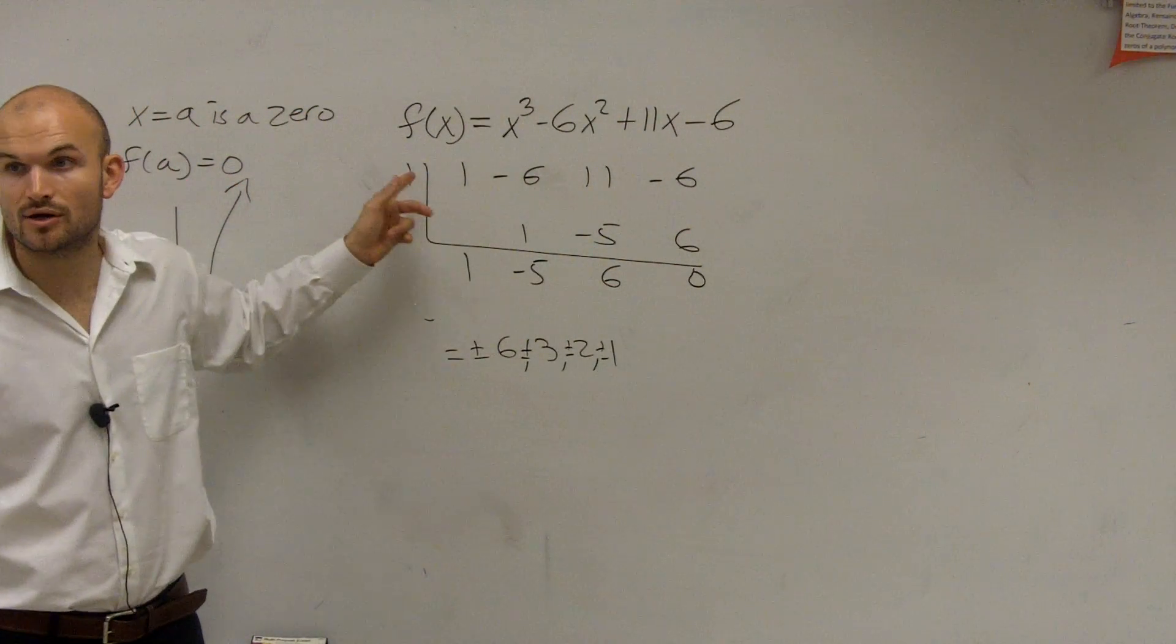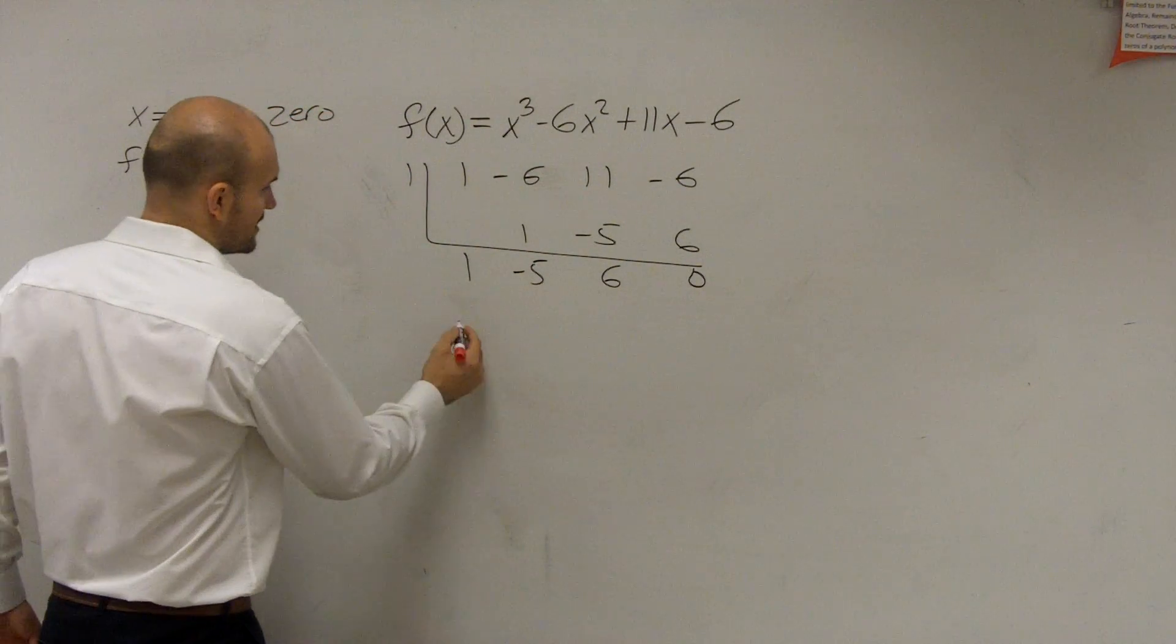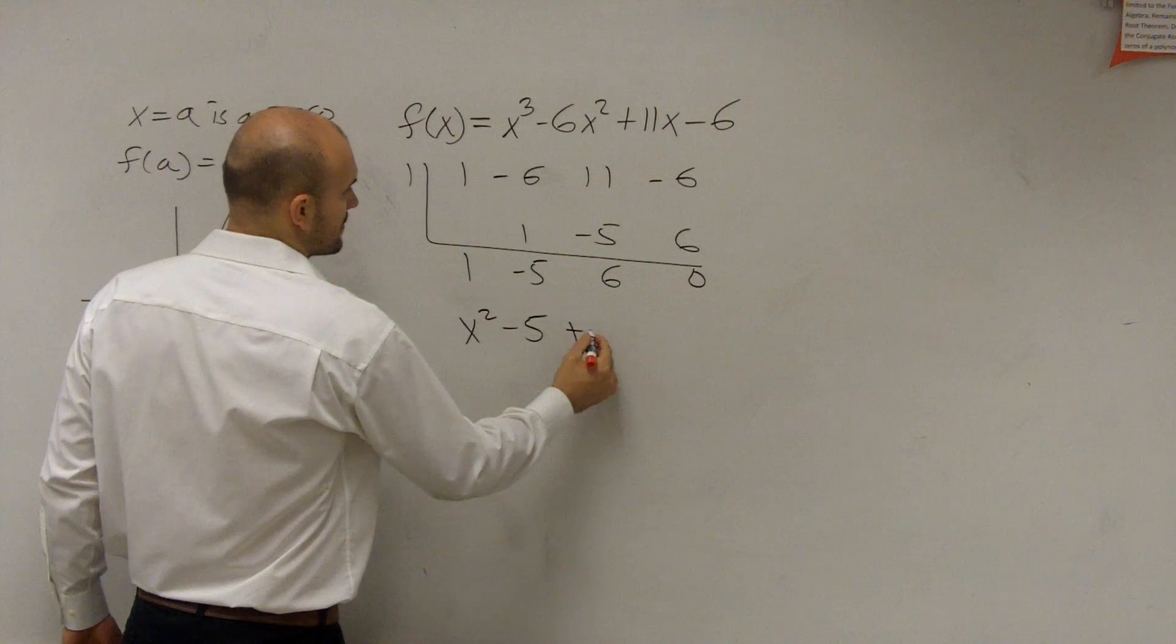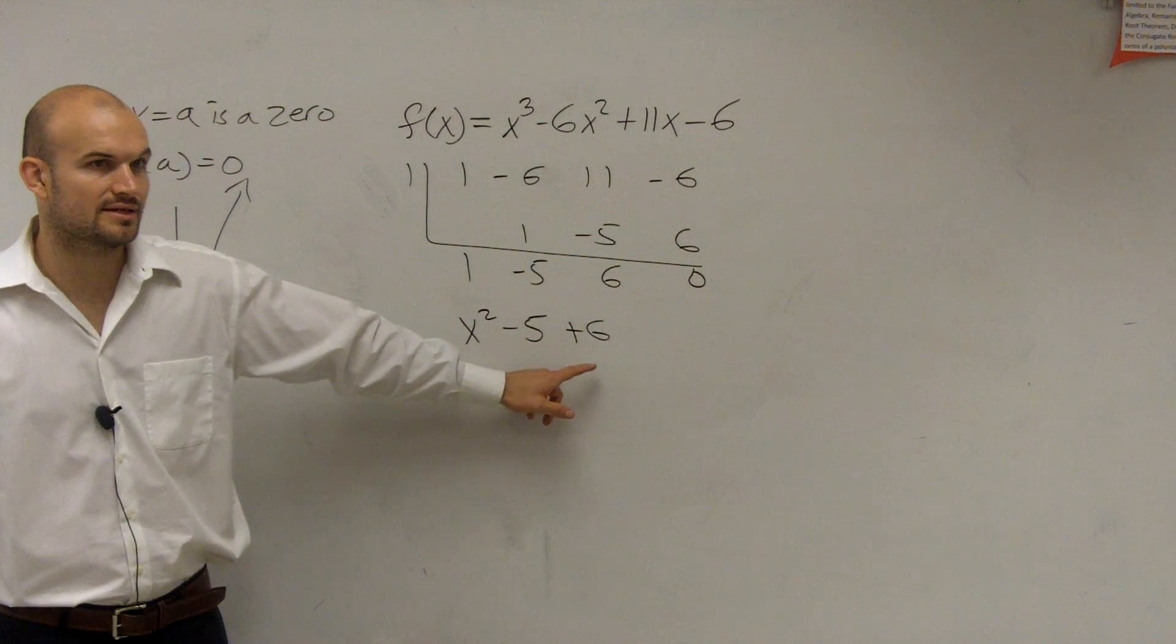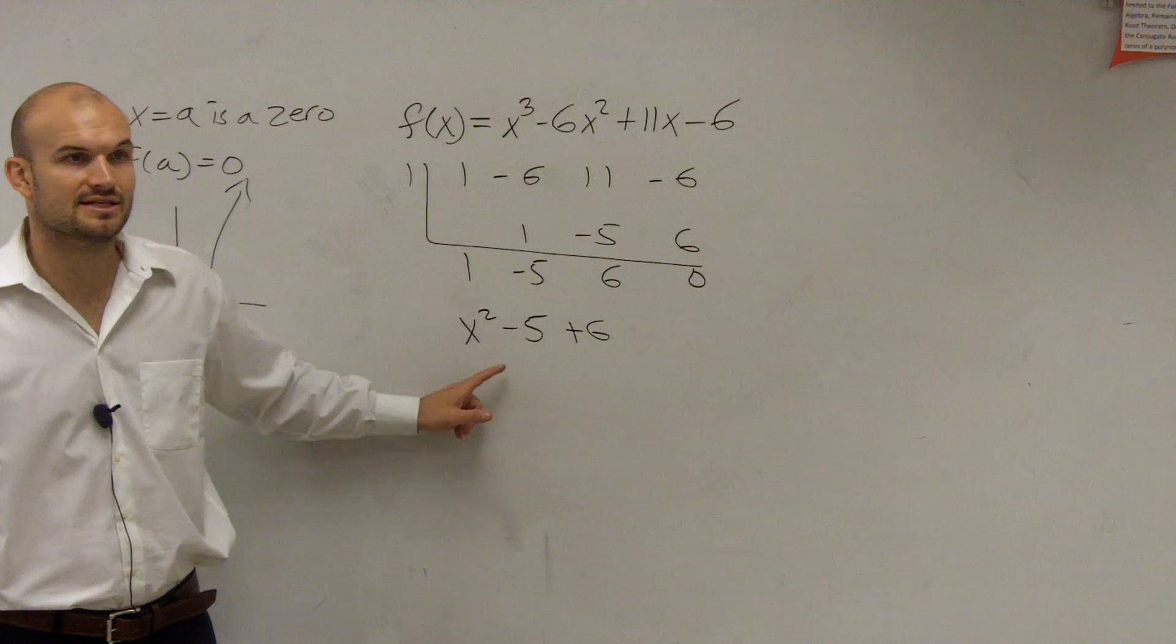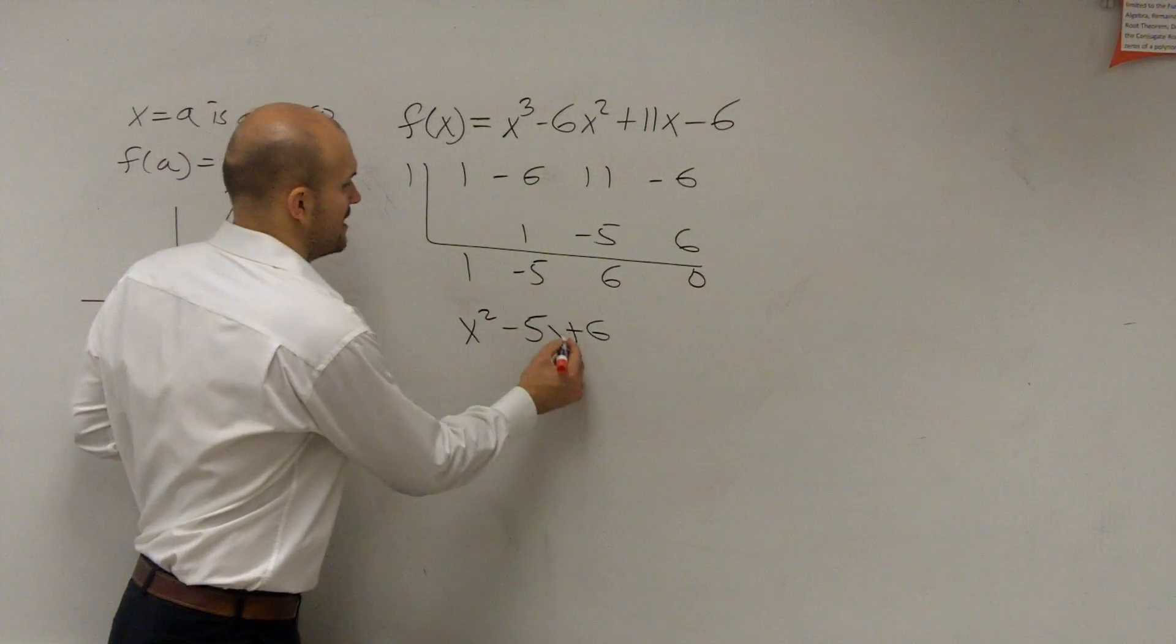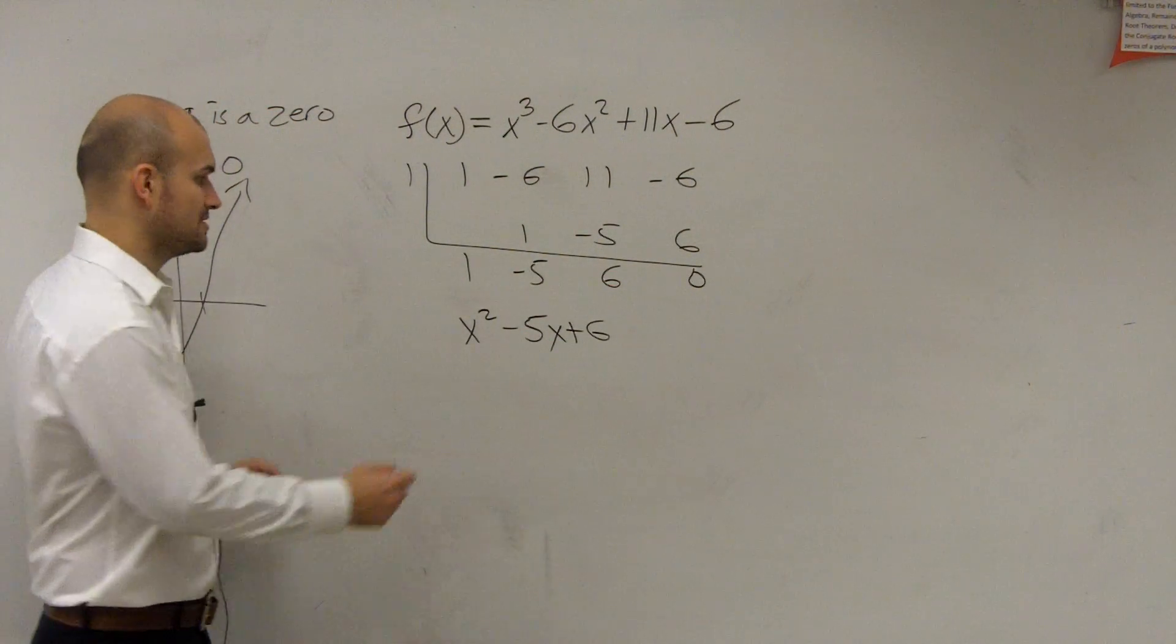Is 1 a zero? Yes, it is. So then my resulting factor is x squared minus 5x plus 6. Are there any two numbers that multiply to give you negative 6, but then add to give you 3 and 2? Or add to give you negative 5x? Because they're adding to 0. So you could say x minus 3 and x minus 2.